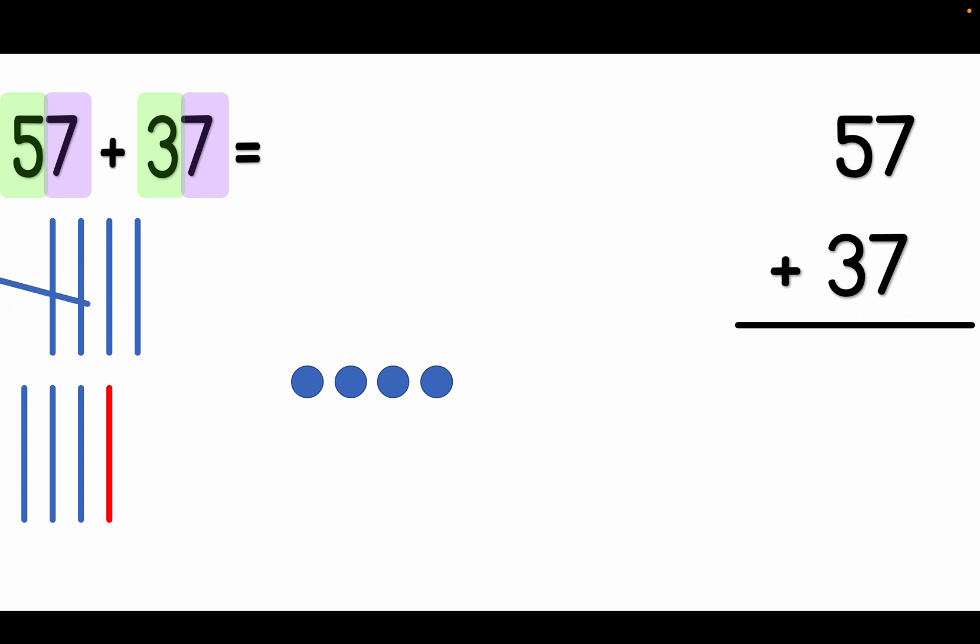Now let's see how many tens we have: 10, 20, 30, 40, 50, 60, 70, 80, 90. There are nine tens, which is the same as 90.